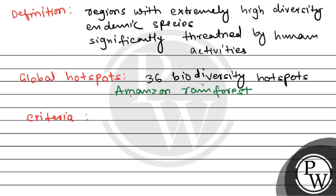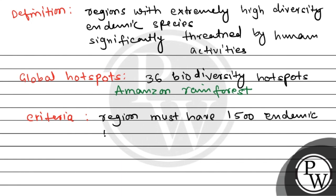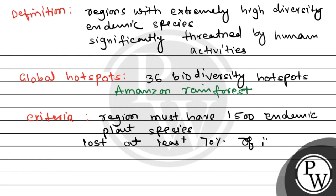To qualify as a biodiversity hotspot, a region must have at least 1500 endemic plant species. This is the first criteria for a region to be classified as a biodiversity hotspot.